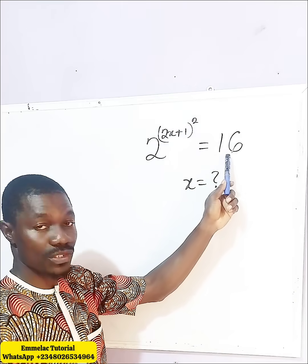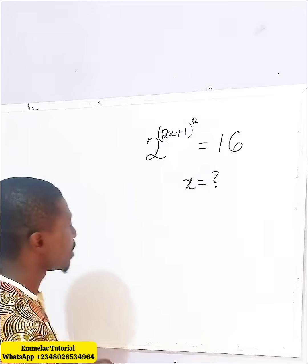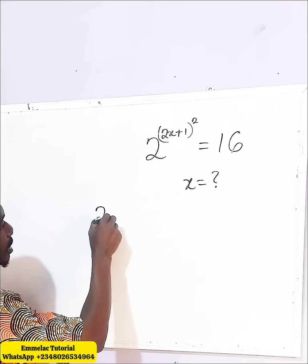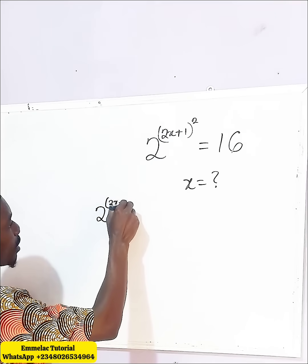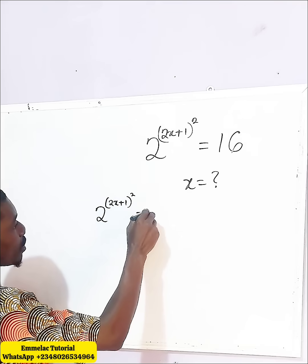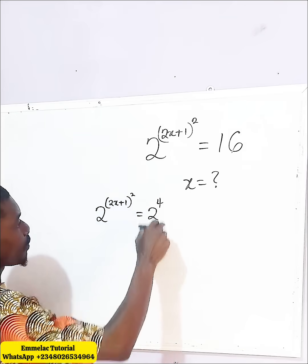Let us reduce it to a base of 2. We have that 2 raised to the power of (2x plus 1) to the power of 2, then it equals 2 raised to the power of 4.